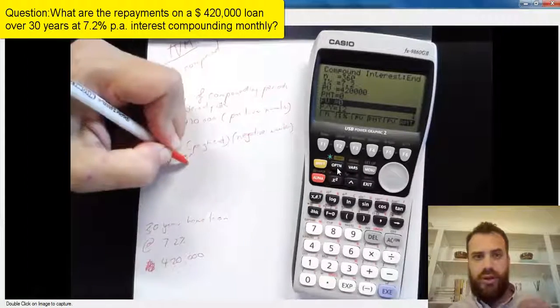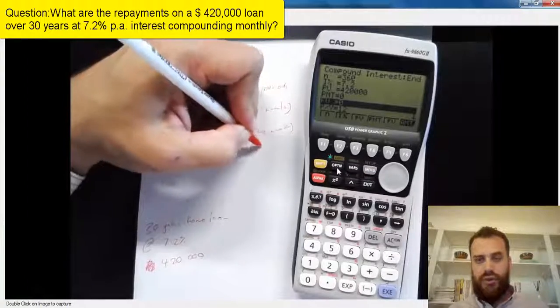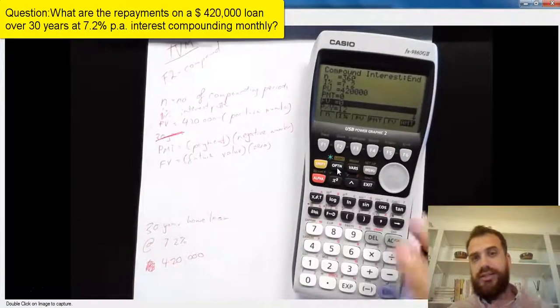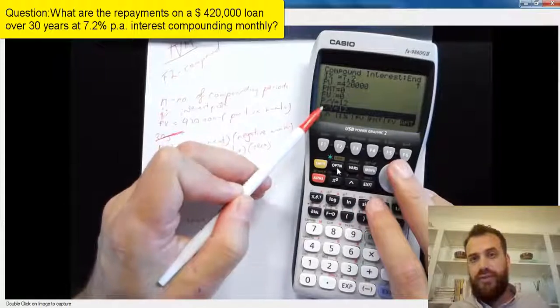So after that, we've got our future value. Now, the future value is the future value of the loan. In this case, it's at the end of the loan, so the future value is just going to be zero.